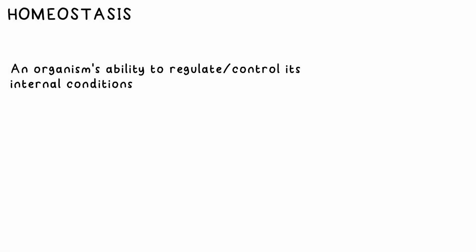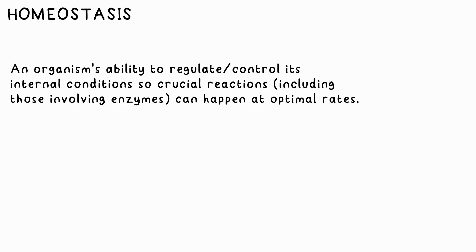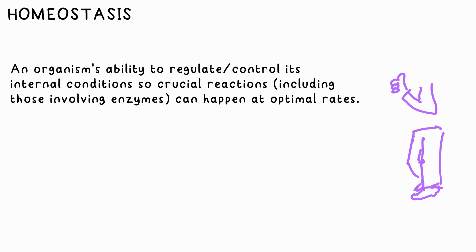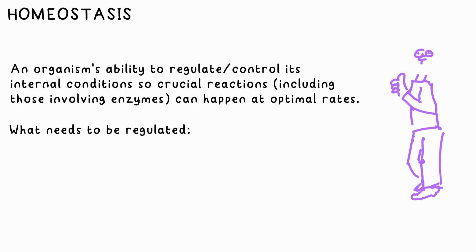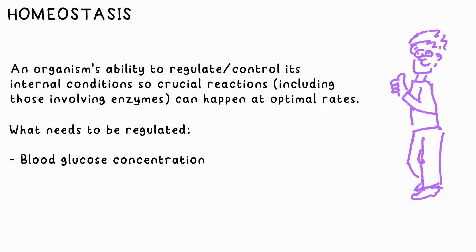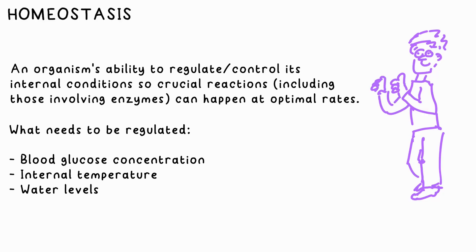Homeostasis is the term given to an organism's ability to regulate internal conditions, even when external conditions change. This is important so crucial chemical reactions involving enzymes can happen at an optimum rate. Amongst other things, our bodies work hard to regulate blood glucose concentration, temperature and water levels.